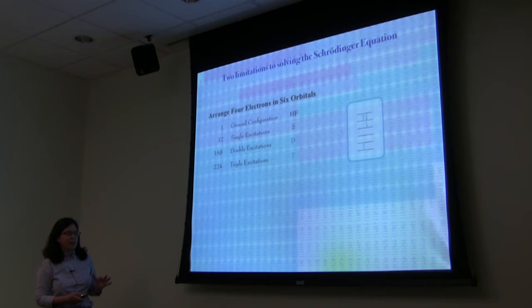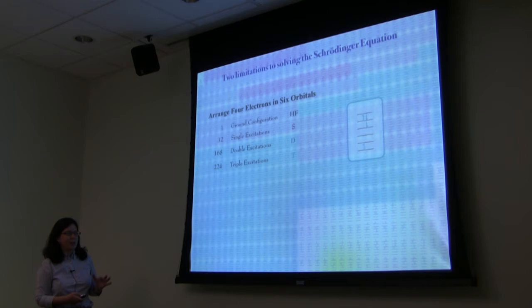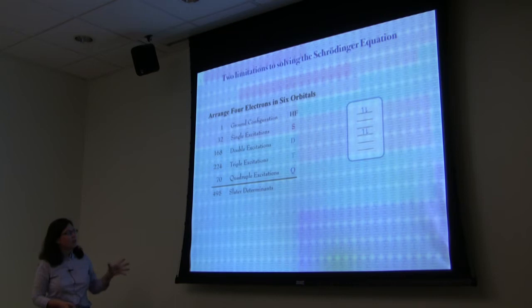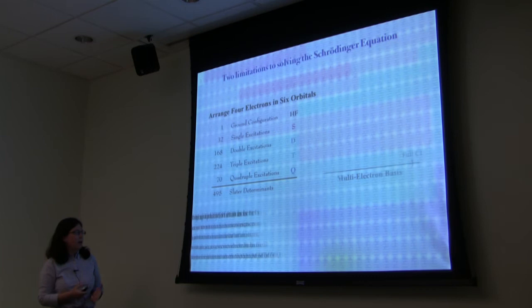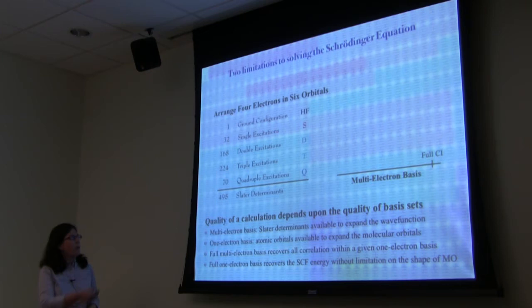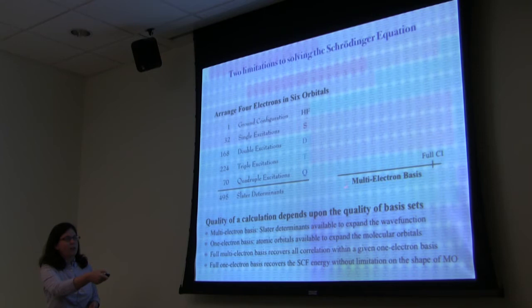Triple excitations give even more, and finally quadruple excitations. All together we have about 500 Slater determinants, and each is a member of the multi-electron basis set — the number of Slater determinants available to expand the wave function. You can start with just the Hartree-Fock determinant, and if you incorporate all of these, you get to full CI.